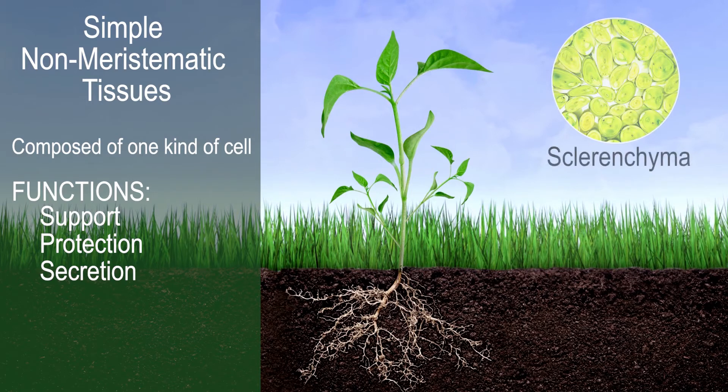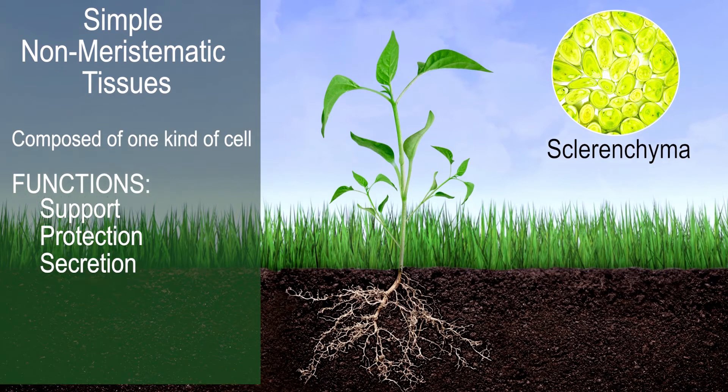Sclerenchyma tissues, for example, are simple tissues that contain thick, hard walls to support the plant body.